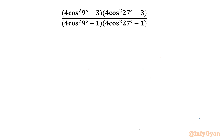Welcome back to Infigyan, my dear friends. In today's video we have one very interesting question from Trigonometry where we are going to simplify the expression: (4cos²9° − 3)(4cos²27° − 3) over (4cos²9° − 1)(4cos²27° − 1). Let's get started by considering the given expression equal to E first.